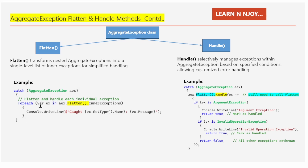In the catch block for AggregateException aex, I use a foreach loop: foreach (var ex in aex.Flatten().InnerExceptions). The Flatten method simplifies handling by flattening nested aggregate exceptions into a single list — that is, the InnerExceptions — allowing easy iteration and handling of each exception individually.